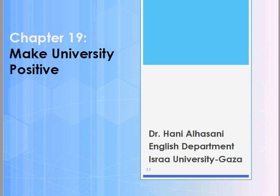Now let's continue to chapter 19. In the previous chapter, we recognized it's easy to gather ideas in a few words. For chapter 19 — make university positive — we need to recognize extra information as this is considered the last chapter of the whole book.